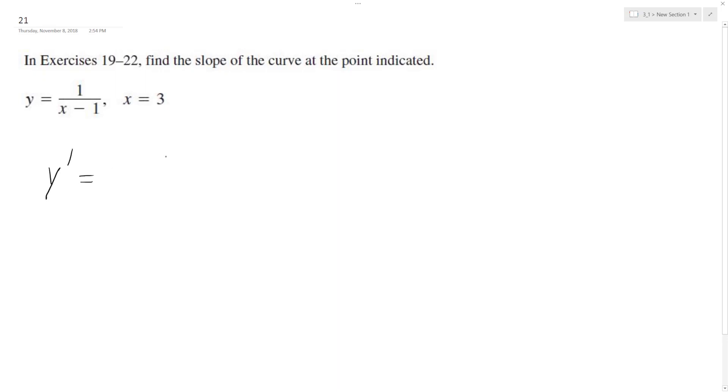So y prime is equal to... I'm going to rewrite this as (x - 1) raised to the negative 1. Using the chain rule, the derivative of what's on the inside is just 1. So y prime equals negative 1 times 1, which gives negative 1 times (x - 1) raised to the negative 2.